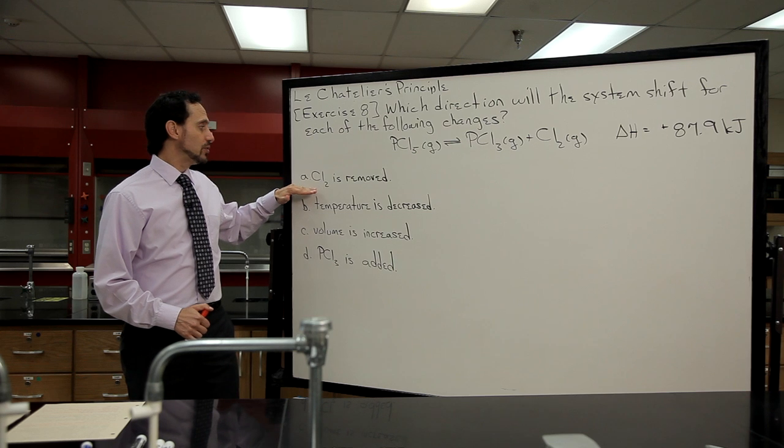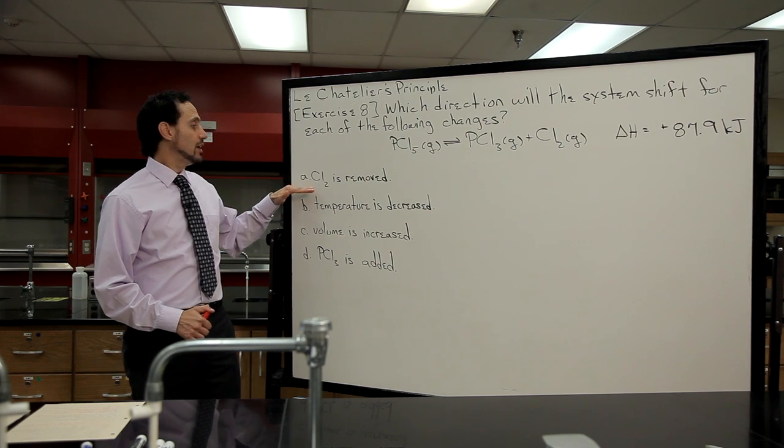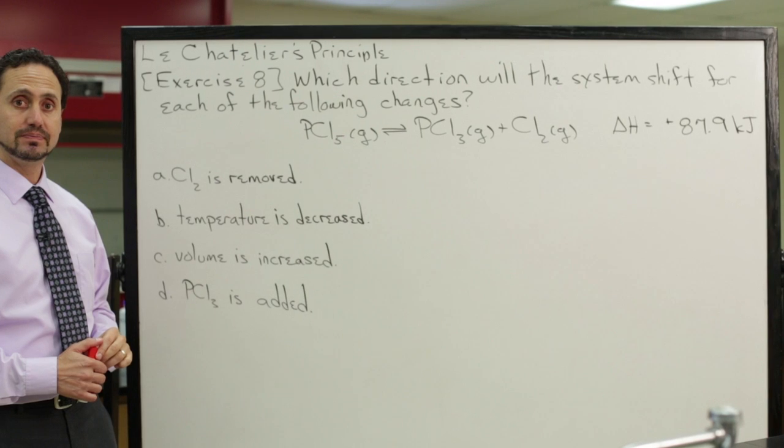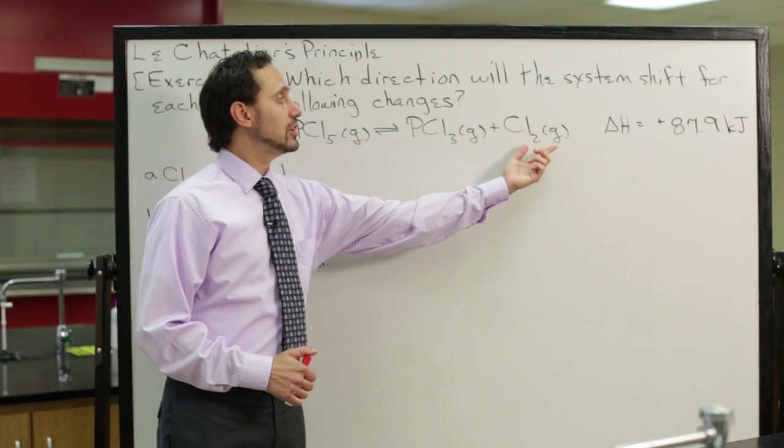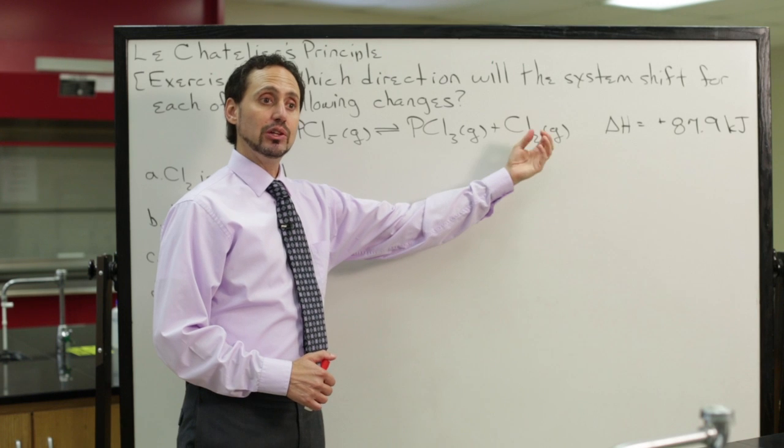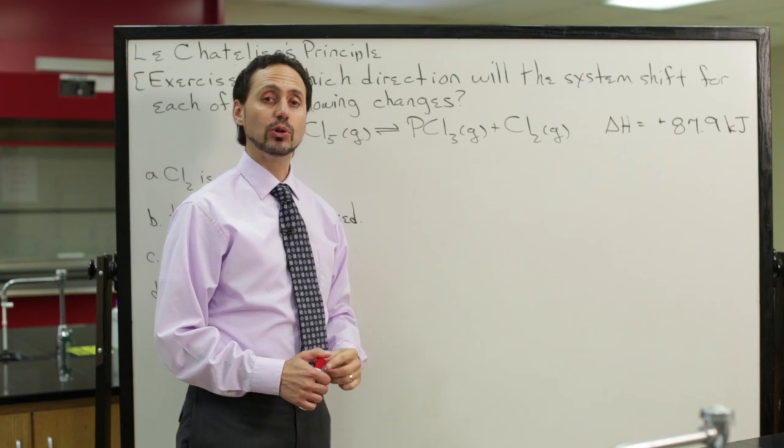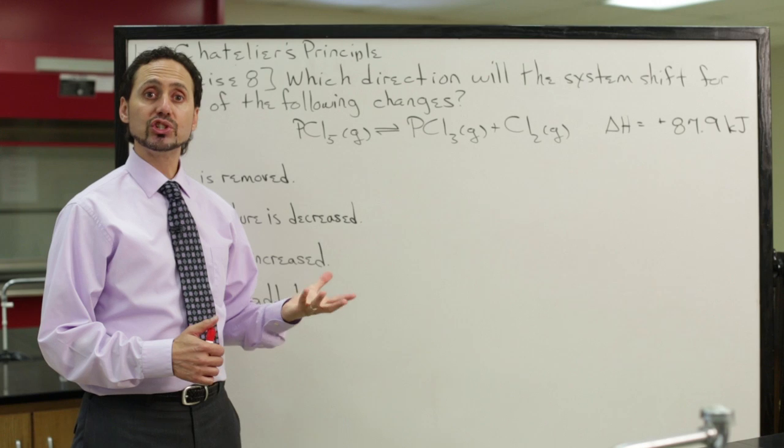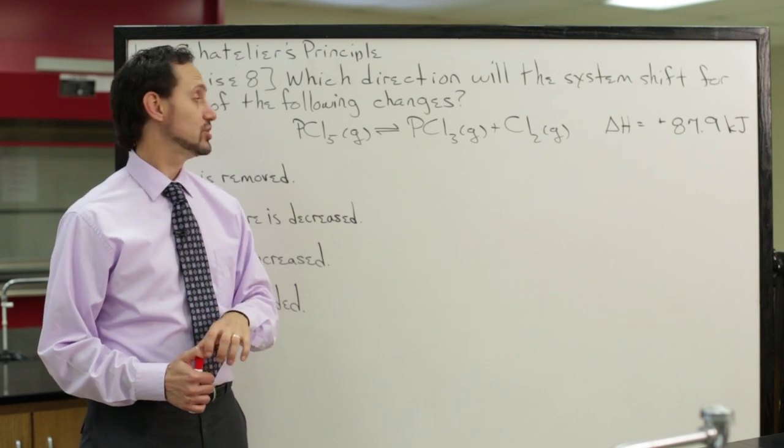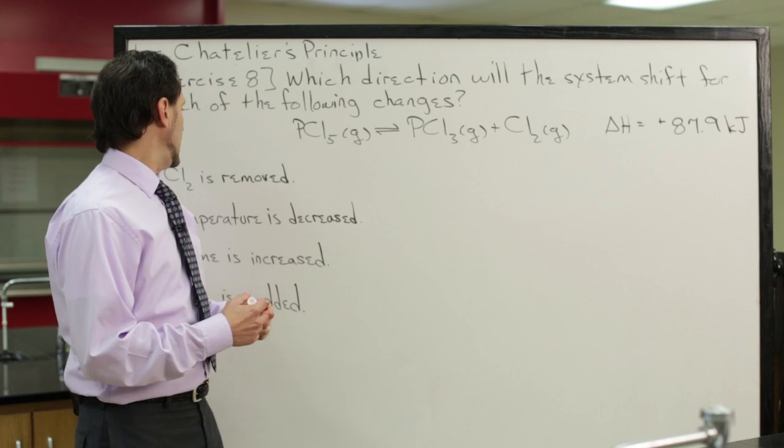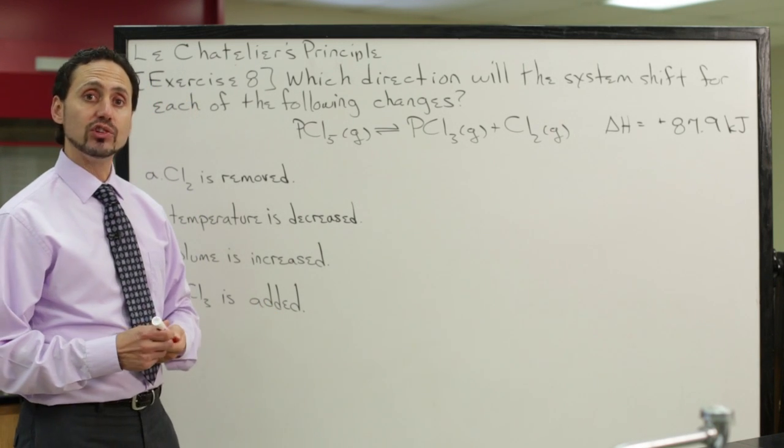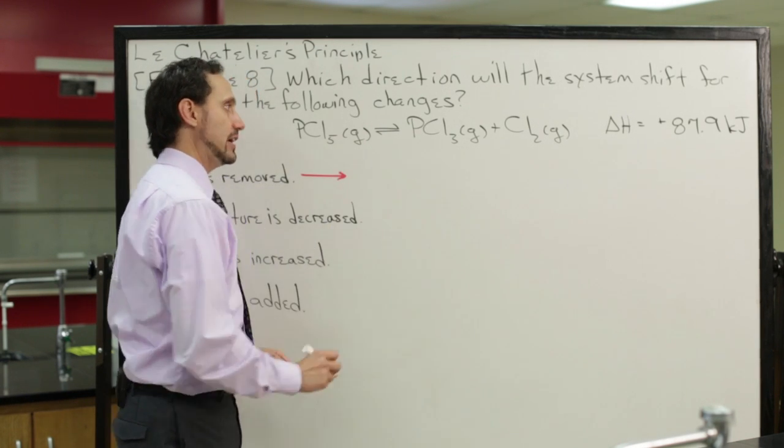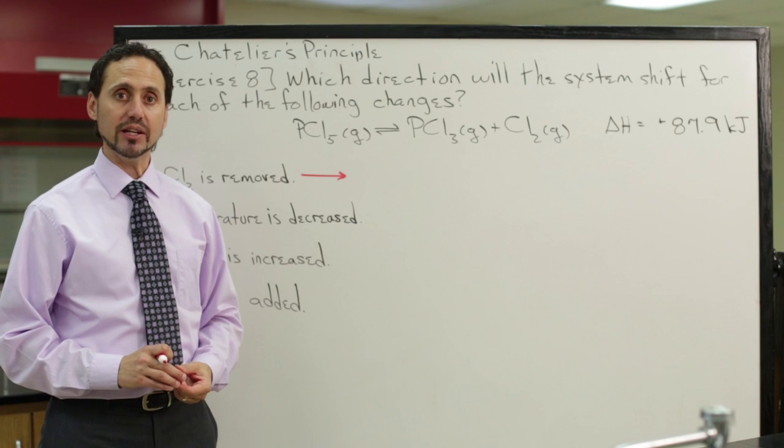First of all, what happens when some chlorine gas is removed from the system? If we're removing chlorine gas, that means we're decreasing the concentration of chlorine, and Le Chatelier's principle predicts that the system will shift to restore that change. So if chlorine gas is removed, the reaction will shift to create more chlorine gas. It will shift to the right.